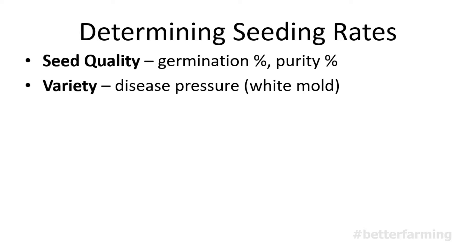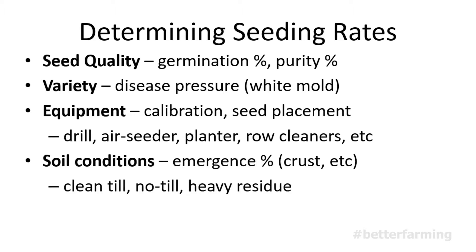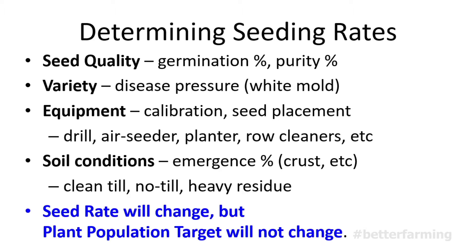Equipment can really have a major impact on your seeding rates. It used to be talked about in terms of row widths, but it's really more about the equipment — whether you have a drill, an air seeder, or a planter — that's what causes the change in seeding rates. Obviously field conditions are a big player. If you have cool wet conditions or heavy residue, you'll go up or down accordingly. But at the end of the day, the seed rate will change based on all these factors, while the target plant population will not change.